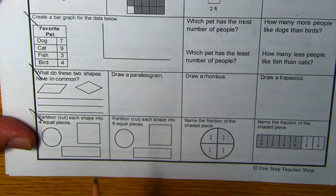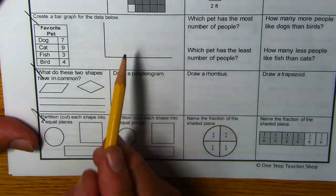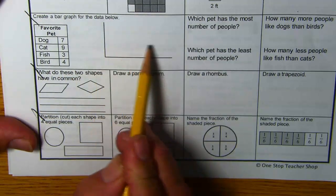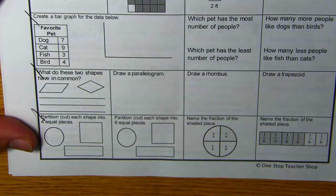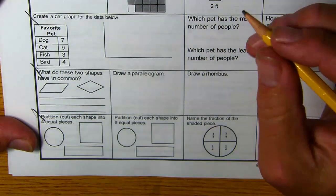Create a bar graph for the data below. Now, you could have the numbers going this way, the bar graph going that way, or you could have it going up. Let's have it going up.